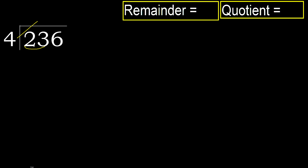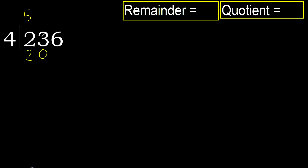4 multiplied by which number is nearest to 23 but not greater? 4 multiplied by 6 is 24 — 24 is greater. 4 multiplied by 5 is 20 — 20 is not greater. Subtract: 23 minus 20 equals 3. Next, bring down: 36.